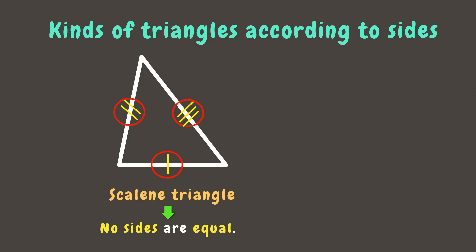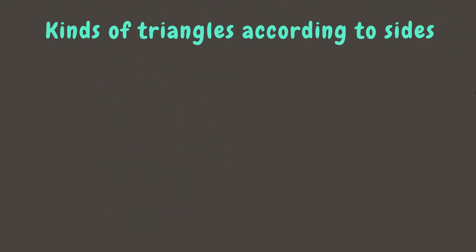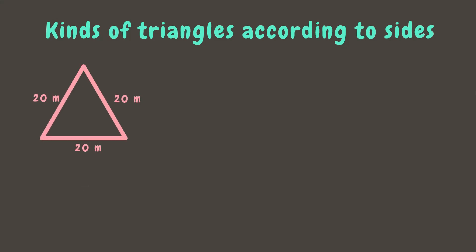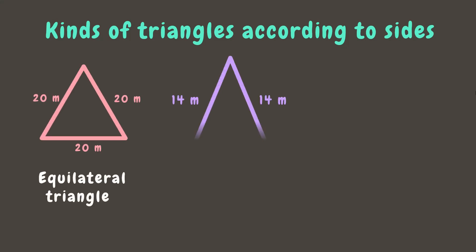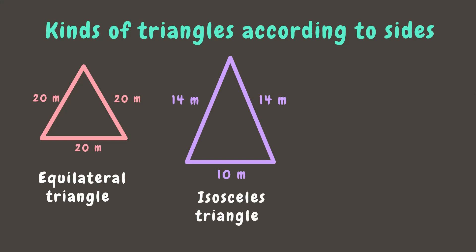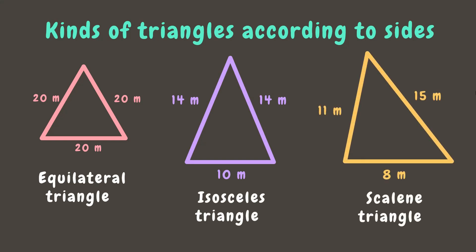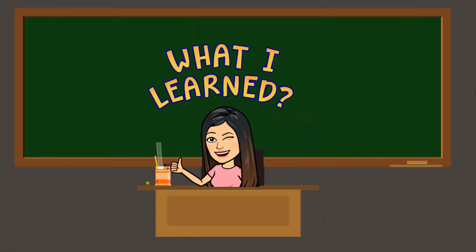Wonderful! Now you already know the kinds of triangles according to its sides. Let's recall: we have equilateral triangle, isosceles triangle, and scalene triangle. Yay! You made it this far, students! Now here are the things that you learned today.